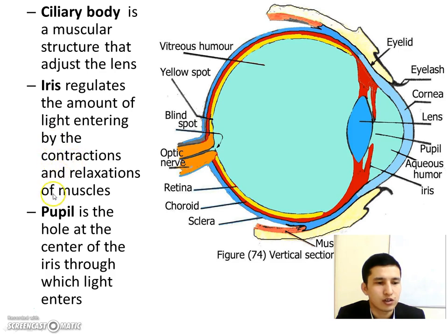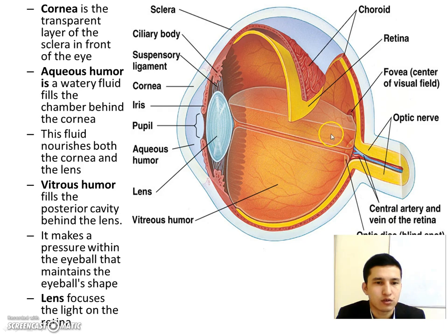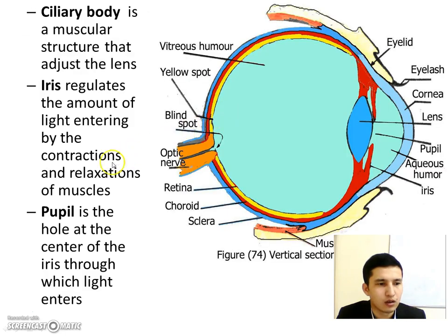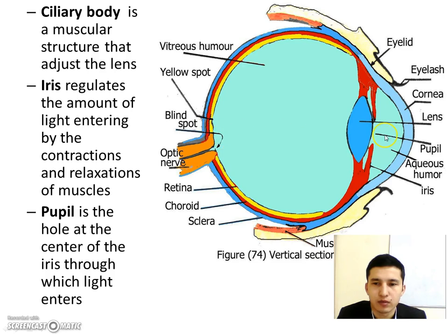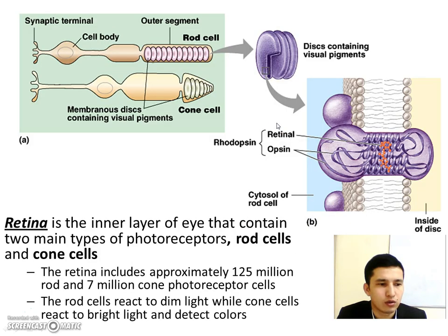The iris regulates the amount of light entering the eye by the contraction and relaxation of muscles. The iris regulates how much light enters inside the eye. The pupil is a hole at the center of the iris through which light enters.